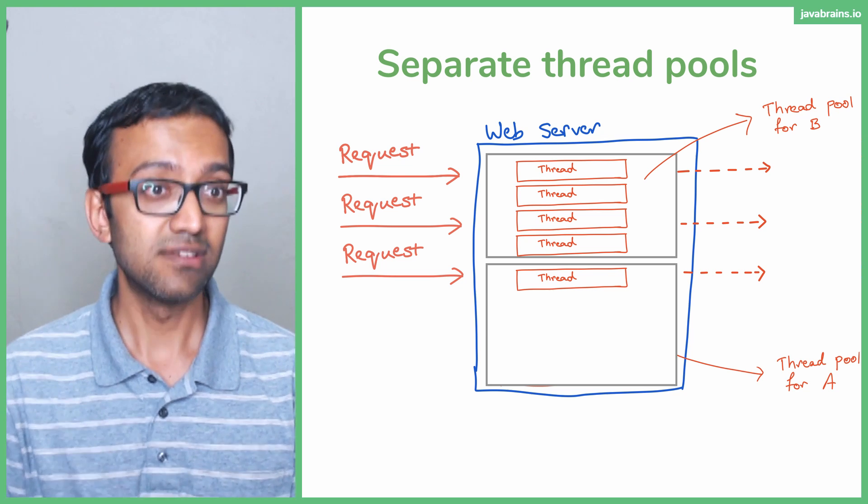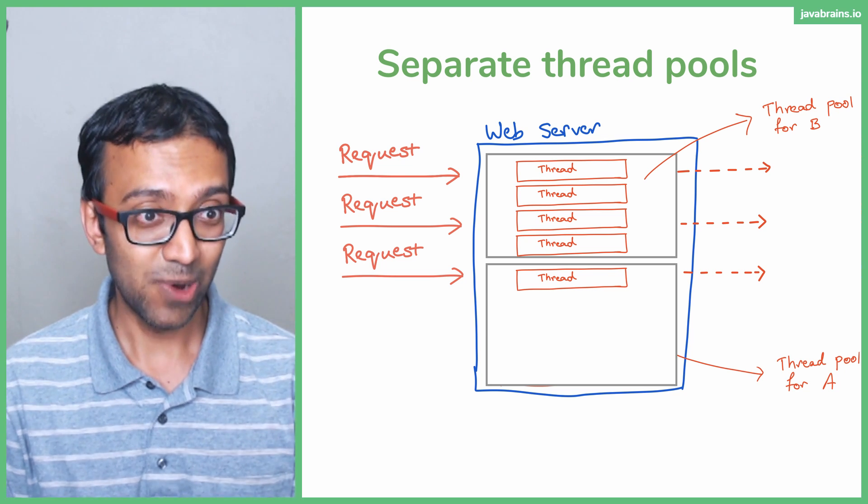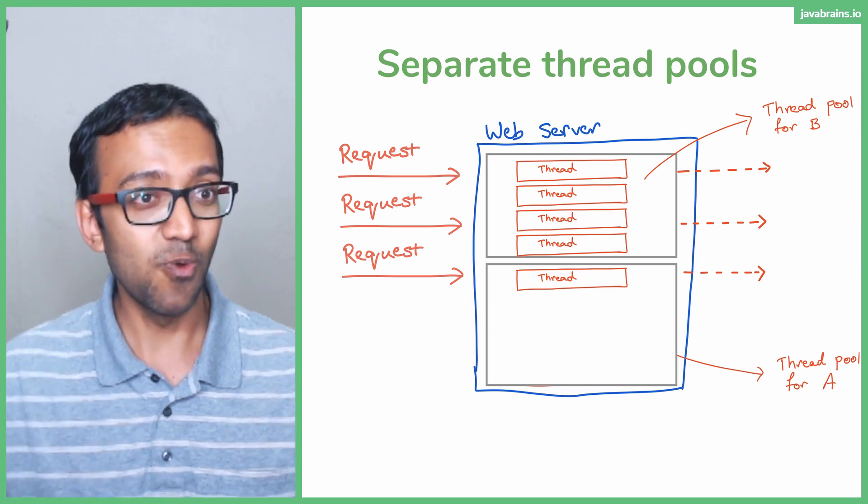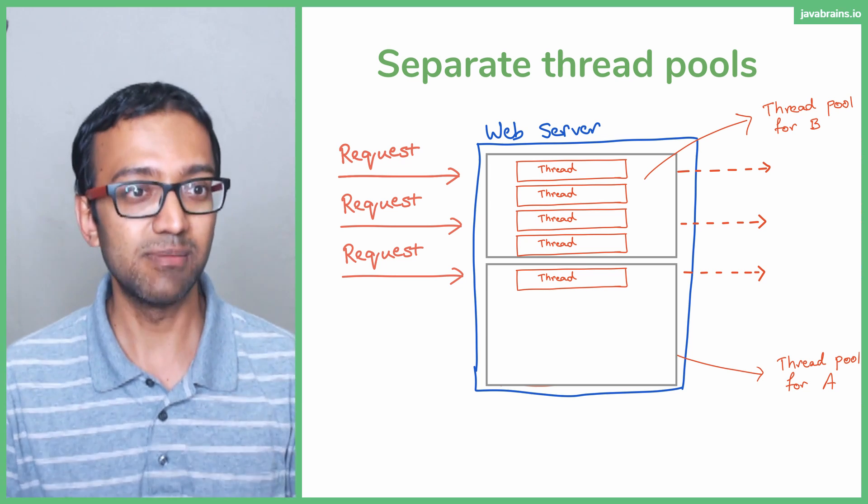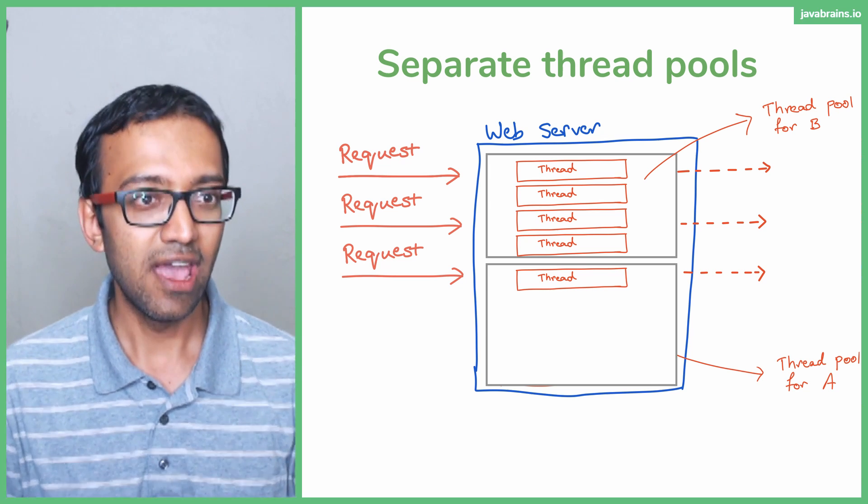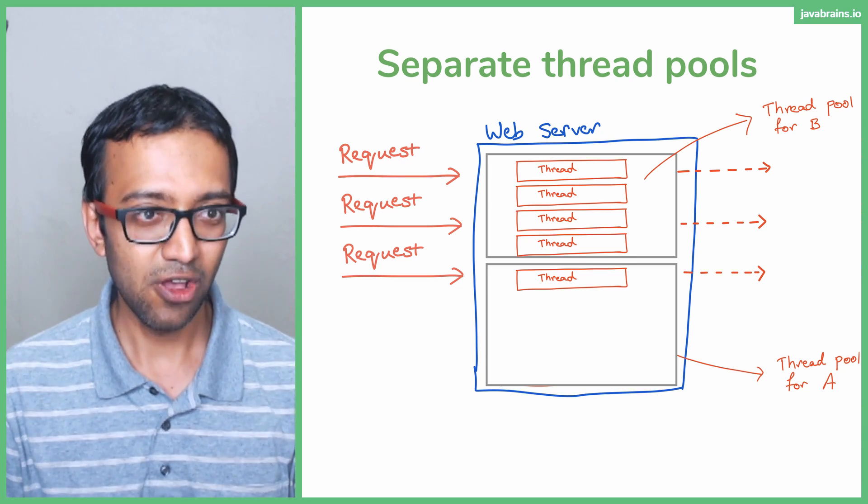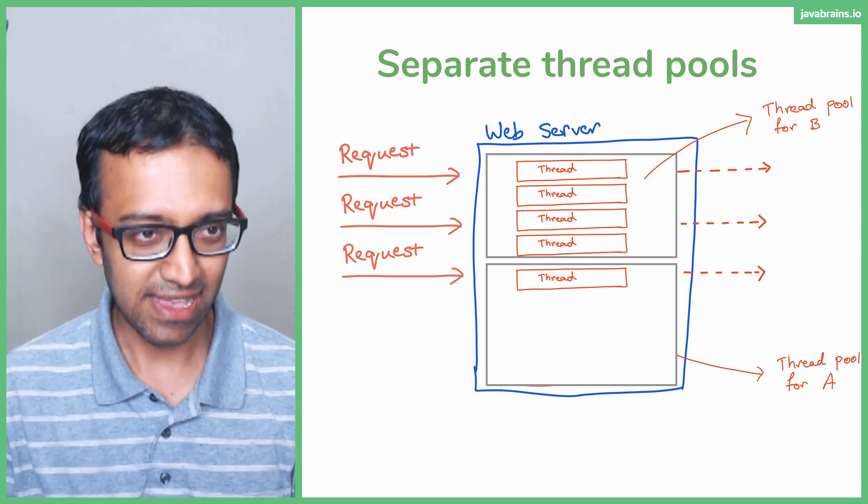Requests to A are going to be fast. So you have basically created these two quote unquote watertight compartments. You've separated those two out and you've applied the bulkhead concept. That's essentially what bulkhead is.